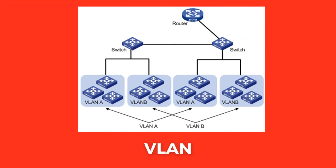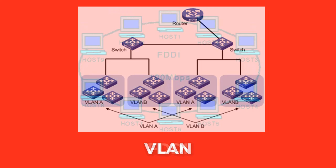VLAN, or Virtual LAN, is a type of local area network where the communicating devices think that they are on the same LAN or subnet, whereas actually they are on different subnets connected by a router.